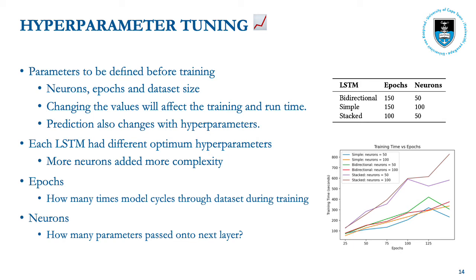Different dataset sizes allowed us to determine whether more data increases accuracy and its effect on training and prediction times. Epochs signify how many times the model runs through the full dataset; increasing the number of epochs should help the model learn and generalize better to unseen test data. Increasing the number of neurons increases the number of parameters passed to the next LSTM cell, which will increase computational complexity but should increase accuracy as well.